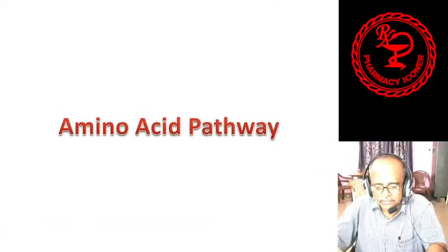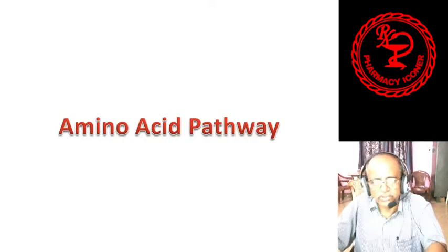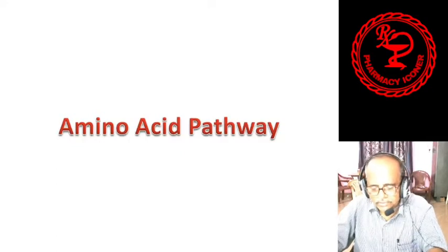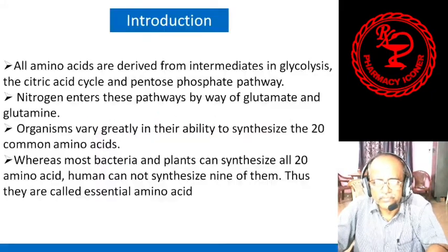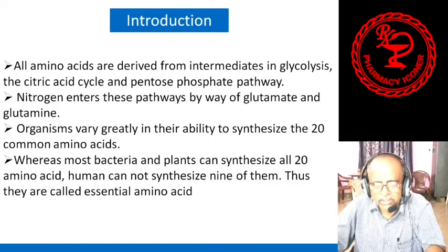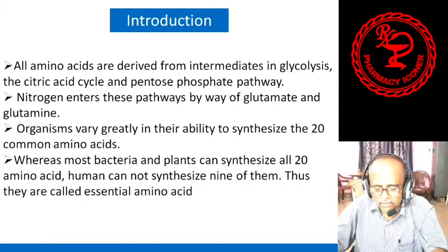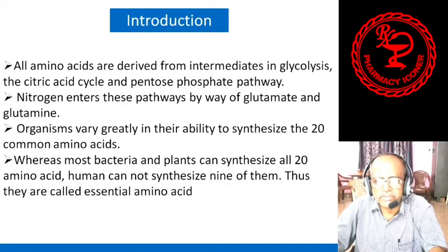Hello everybody. In my earlier two videos I have discussed about the shikimic acid pathway and the acetate-malonic acid pathway. Today we will discuss about the amino acid pathway. All amino acids are derived from intermediates which are formed during the process of glycolysis, citric acid cycle, and pentose phosphate pathway.